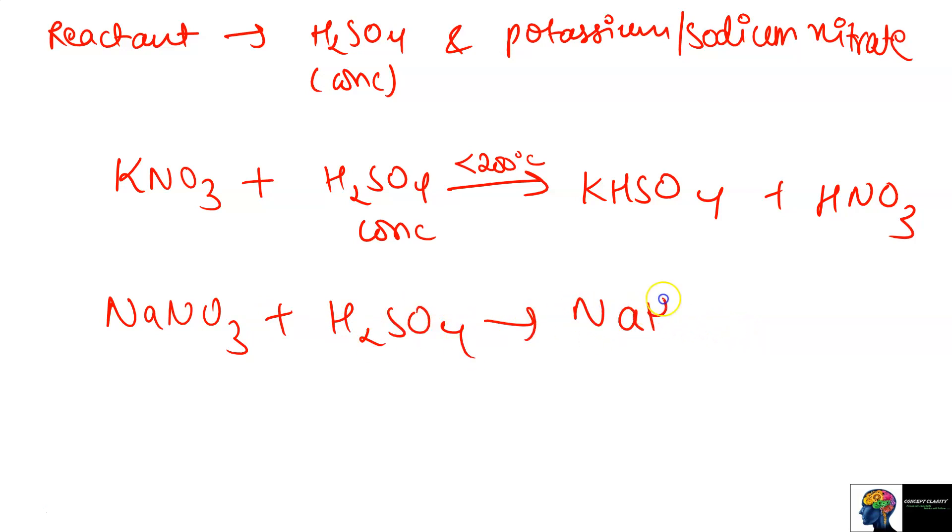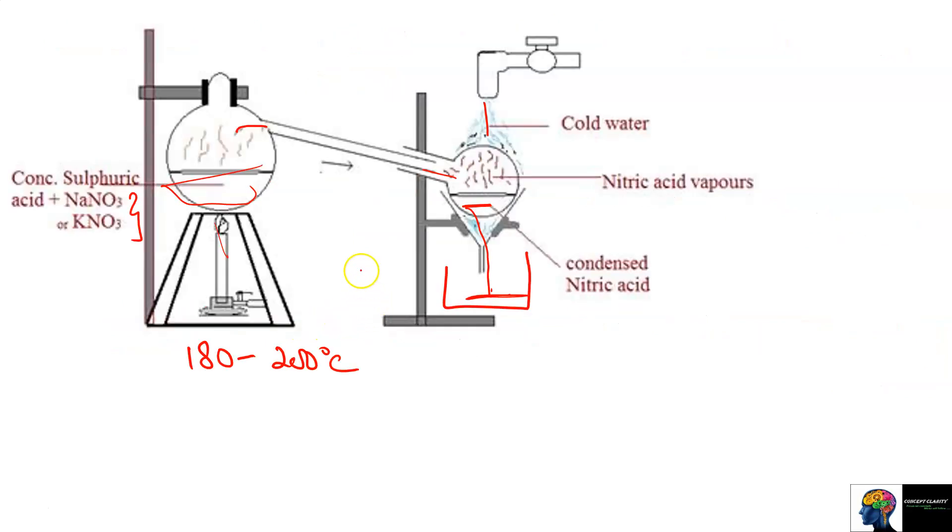If we use sodium, then NaNO3 plus H2SO4 gives NaHSO4, sodium bisulfate, plus HNO3. That's it, no changes, only Na is used instead of K. This was your normal reaction. Now we have collected the nitric acid which has formed, we have collected it here, and we have cold water so that the vapors of nitric acid are condensed.